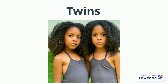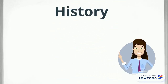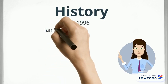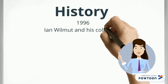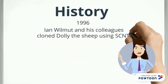Twins are natural clones of each other. After learning about naturally occurring cloning, scientists wanted to replicate the process in a lab. Scientists tried and failed to use somatic cell nuclear transfer to clone until 1996, when Ian Wilmut and his colleagues at the Roslin Institute successfully cloned Dolly the Sheep.